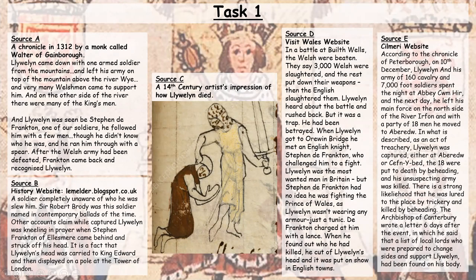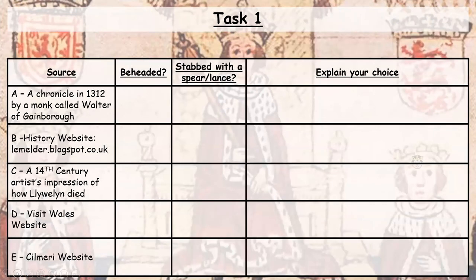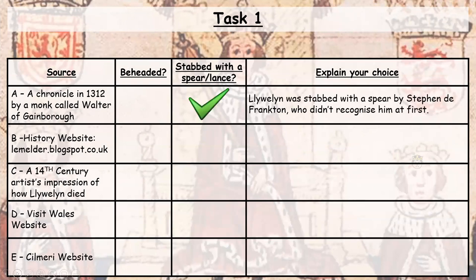Your first task for this lesson is to look at these five sources about Llewellyn's death and then fill in this table, which is available on the worksheet or you can draw it in your books or on paper. For each source, I want you to decide whether it states that Llewellyn was beheaded or stabbed with a spear or lance, and I want you to explain your choice.